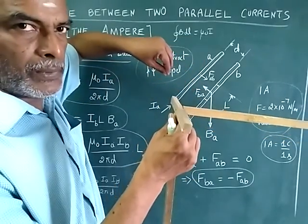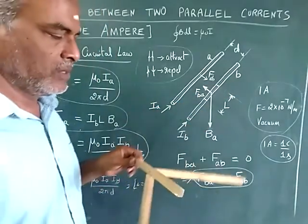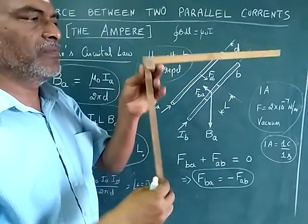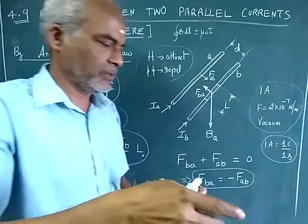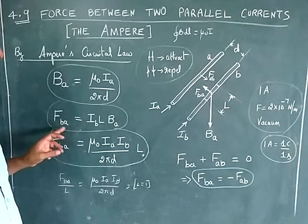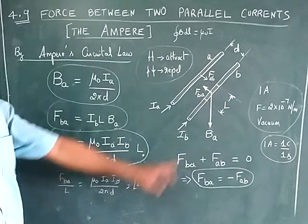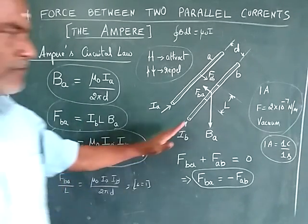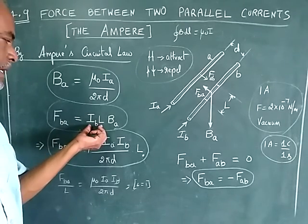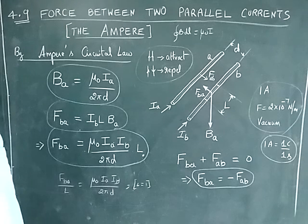This force directed towards conductor A is FBA. For the other conductor, the same thing applies. The direction of current, the direction of the magnetic field, and the direction of force are all consistent. We already know that force FBA equals the current element multiplied by the magnetic flux density BA — that is IB, the current in conductor B, multiplied by length L, so IB into L is the current element, multiplied by BA.